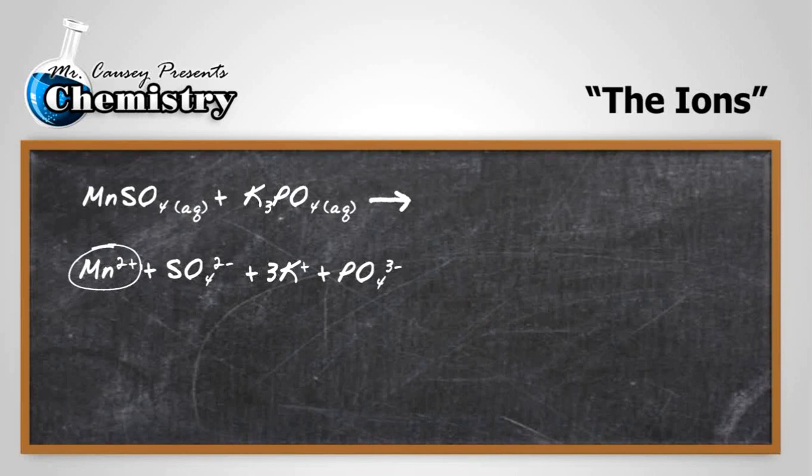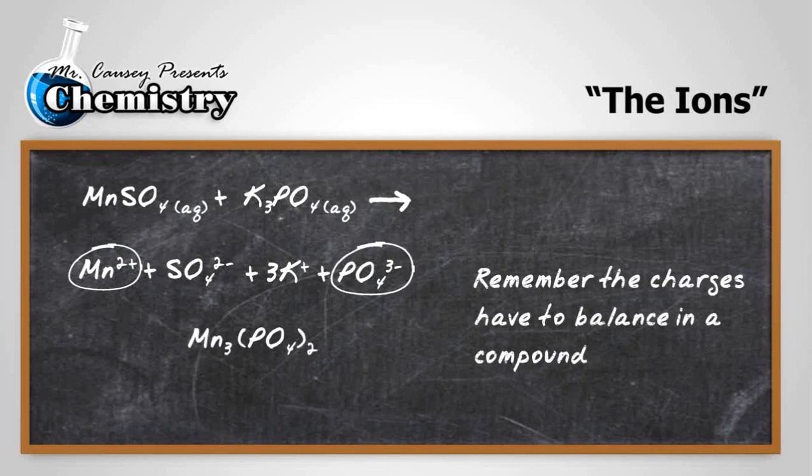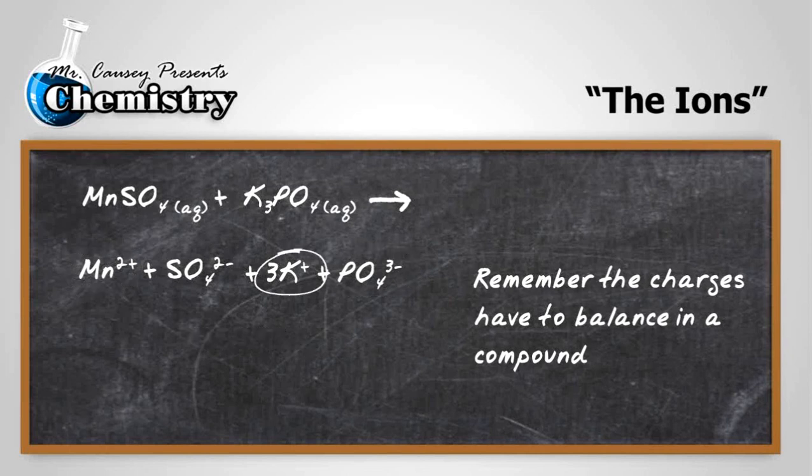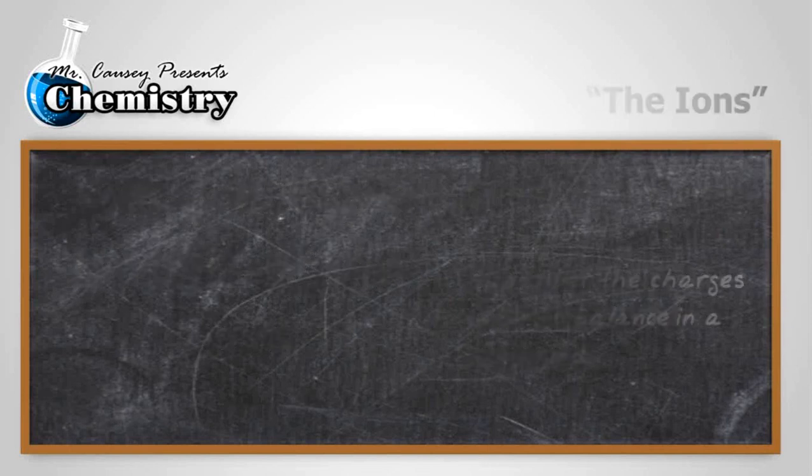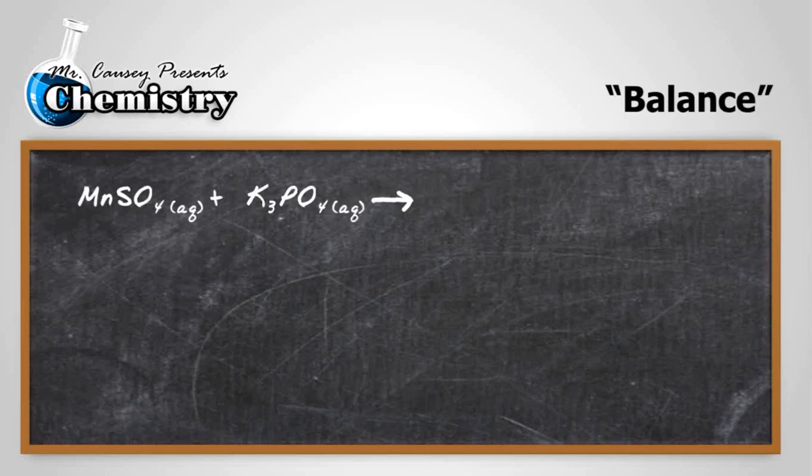That should all balance out—charges look good, moles look good. And we can swap partners here. Manganese will go with phosphate, and remember now the charges have to balance in the compound. So we have Mn3(PO4)2, then we'll have the potassium pair up with the sulfate, and so then we'll have K2SO4. We'll balance out the moles in a minute.